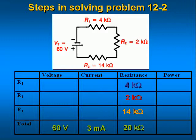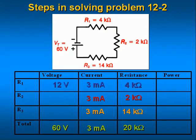Since this is a series circuit, the same current flows through all of the components, so we enter 3 milliamps for each component. We can now compute the voltage across each resistor using Ohm's law, where voltage equals current times resistance. The voltage drop across R1 is 0.003 amps times 4000 ohms equals 12 volts. Across R2: 0.003 amps times 2000 ohms equals 6 volts. Across R3: 0.003 amps times 14,000 ohms equals 42 volts.